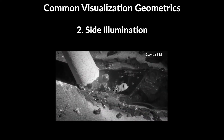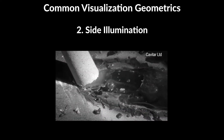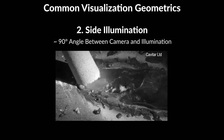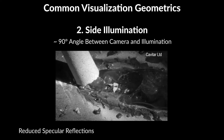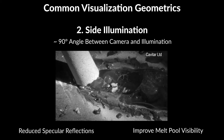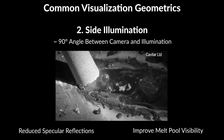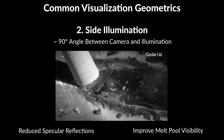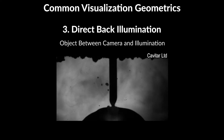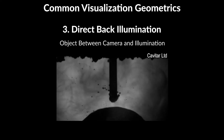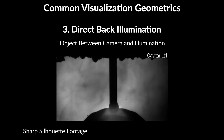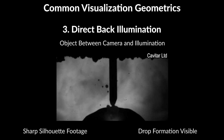2. Side illumination: the angle between the camera and the illumination is around 90 degrees. This setup often reduces specular reflections and can improve the visibility of the melt pool. 3. Direct back illumination: the object is between the camera and the illumination. This setup generates sharp silhouette images, which is suitable for drop formation studies, for instance.